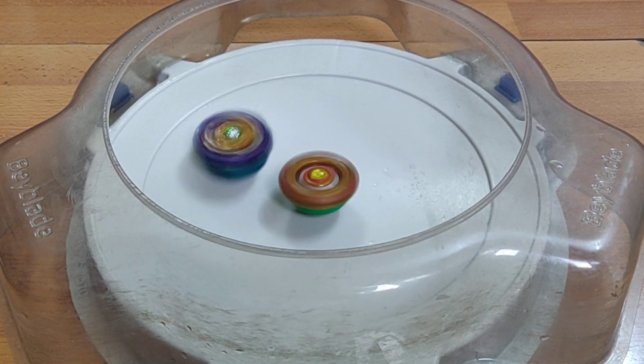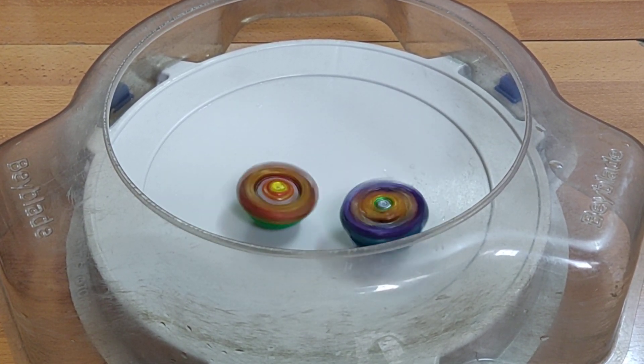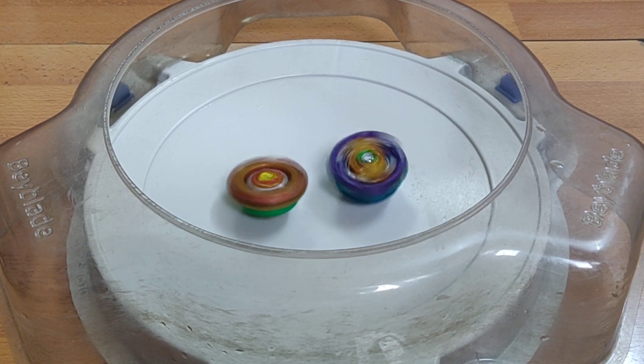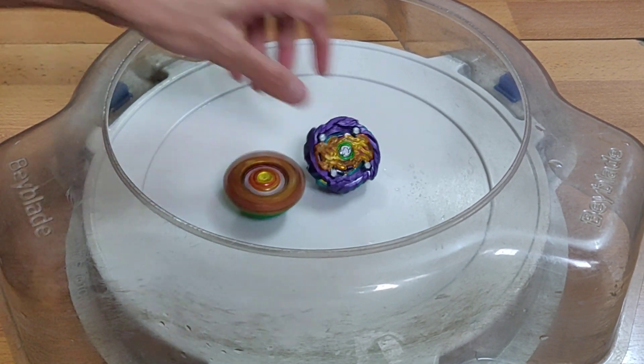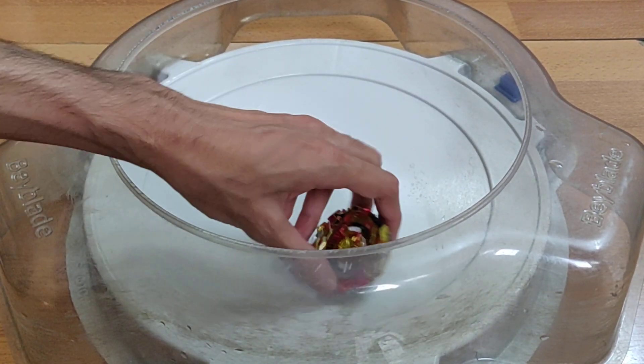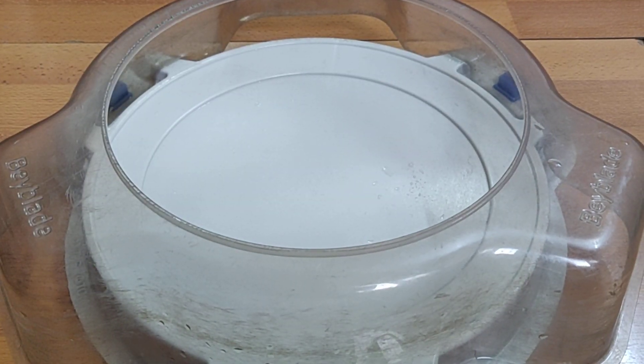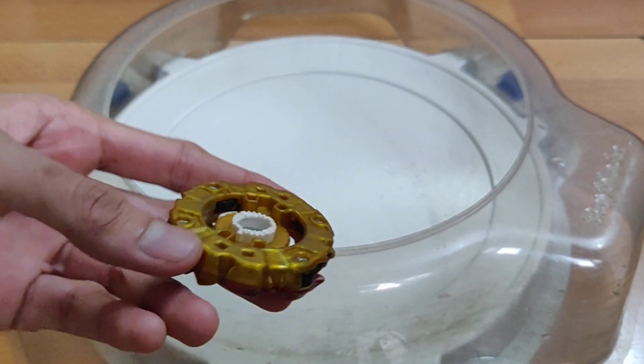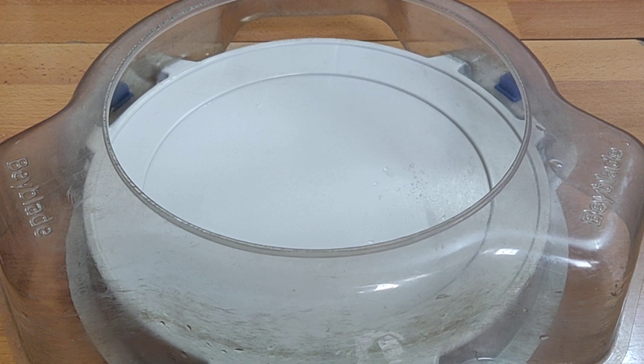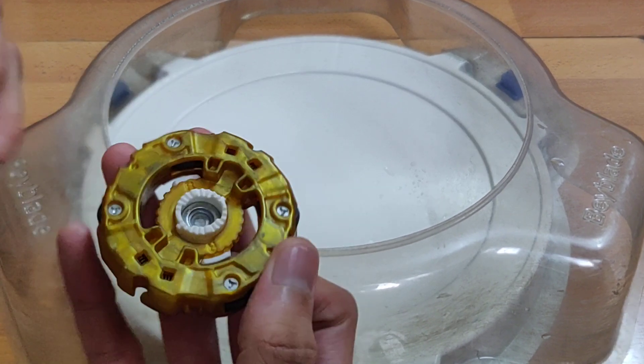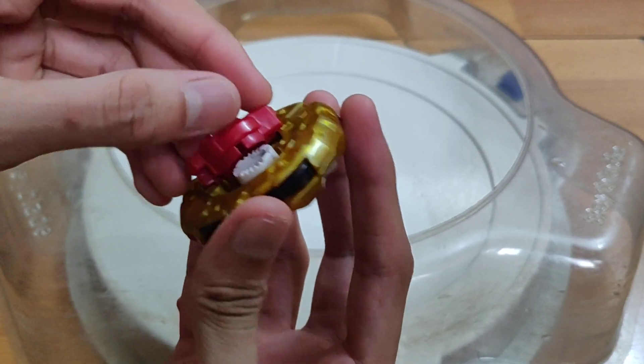That's two rounds which have been burst finishes. If there is a third round of burst finish, I would be switching the direction to right for Chozu Spriggan. Three, two, one, go shoot! First of all, the beyblade itself is beyond control. I don't know why they made this combo as a secret combo.